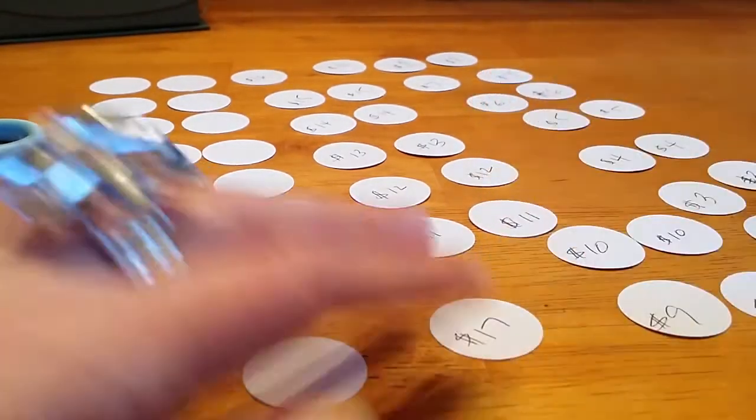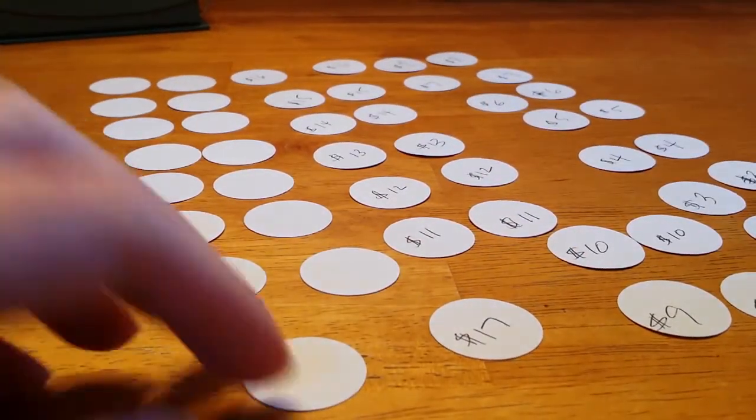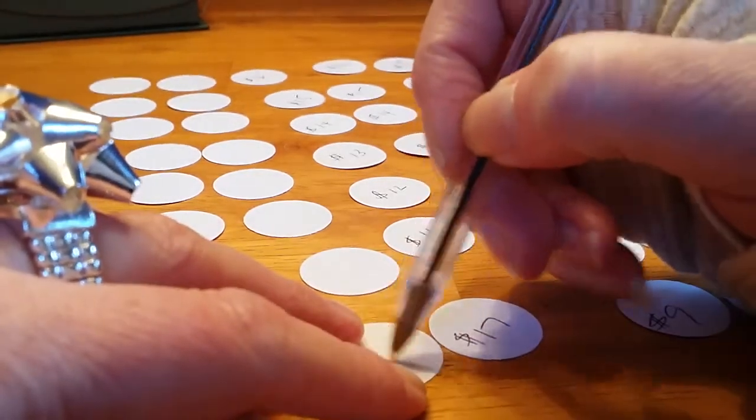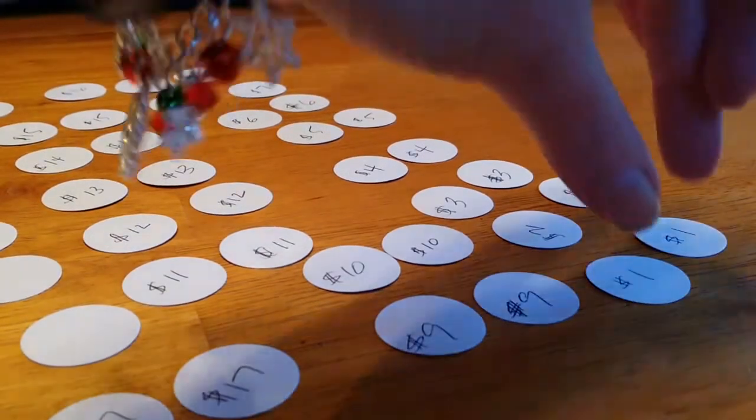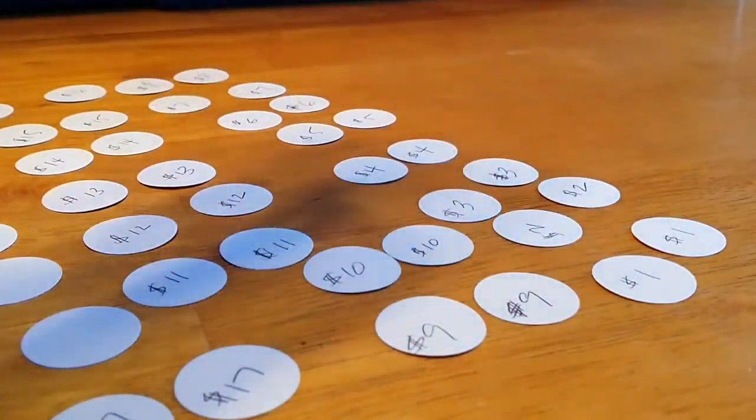So all you do is you cut out 48 circles and on each one, you're going to write two of each number. I have two $1, two $2, two $3, and so on.